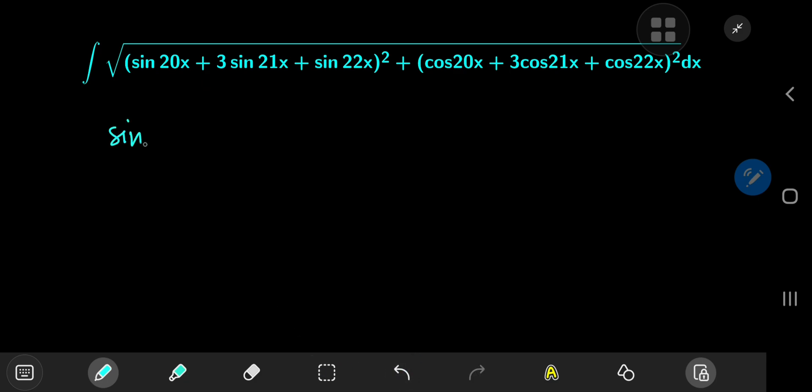We're going to get a squared sine of 20x plus a squared cosine of 20x, which gives us 1. We're also going to have a squared sine of 22x plus a squared cosine of 22x, which again gives us 1.